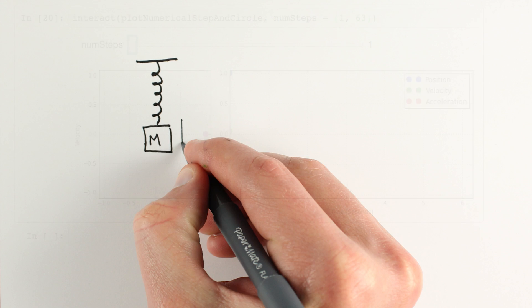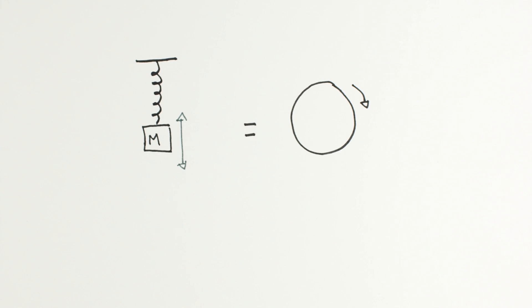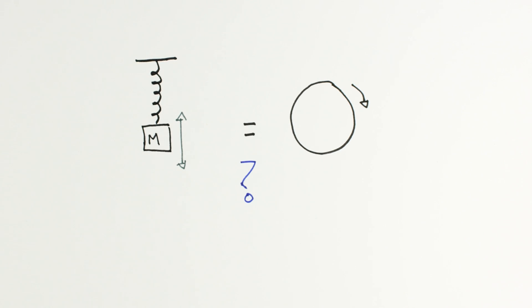So it appears there is some relationship between the way oscillators move and circles. And that's what we're going to explore next time.